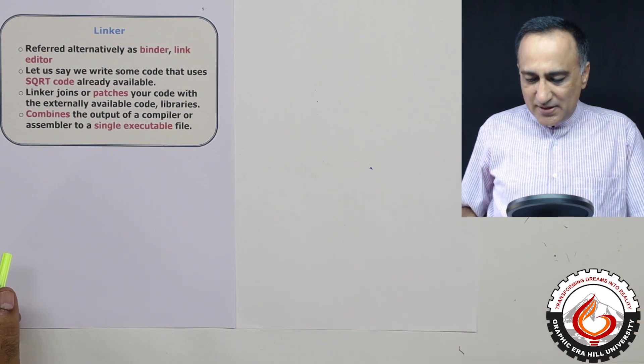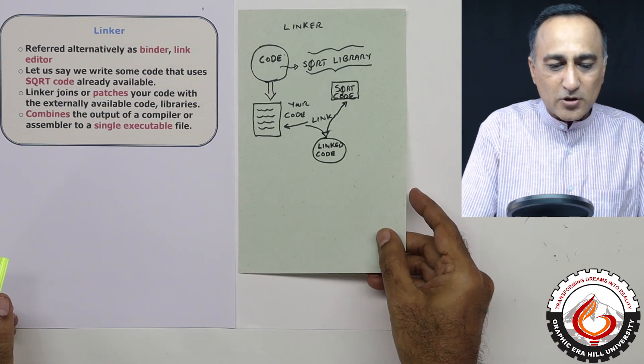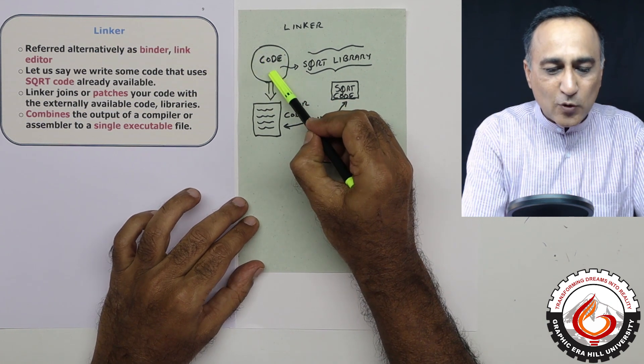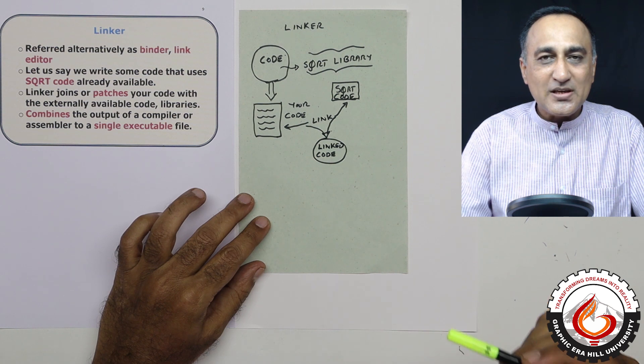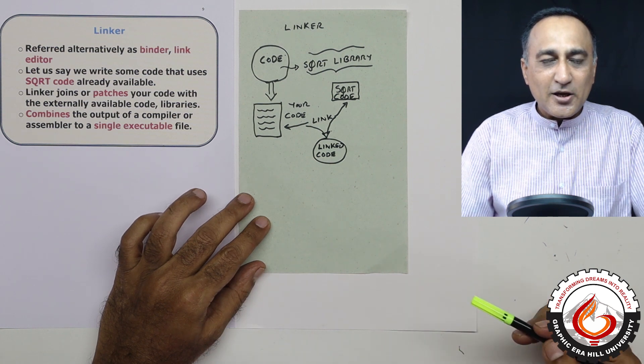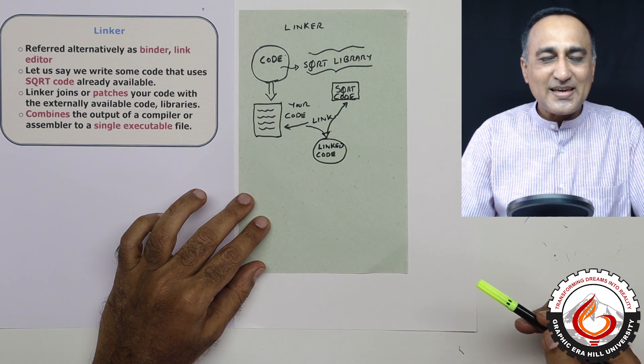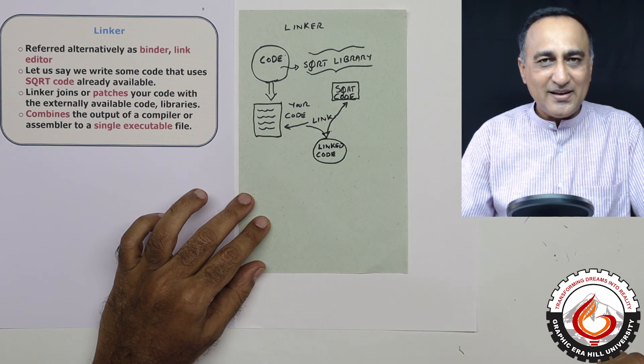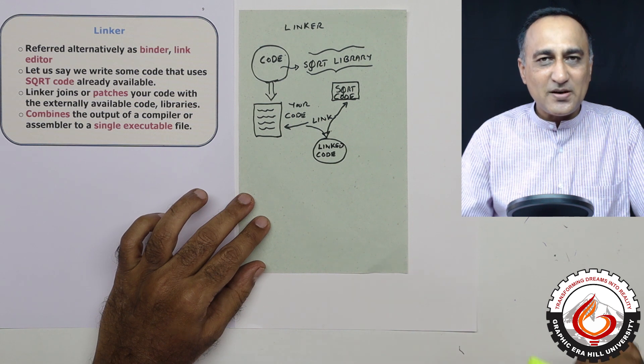So the best way to understand the working of a linker is through this particular example. Let us say I have written a small piece of code to calculate the area of a triangle using Heron's formula. If you remember Heron's formula, it is square root of s into s minus a, s minus b, into s minus c, where a, b, c happen to be the sides of a triangle and s happens to be the half perimeter which is a plus b plus c divided by two.